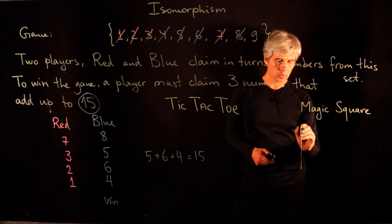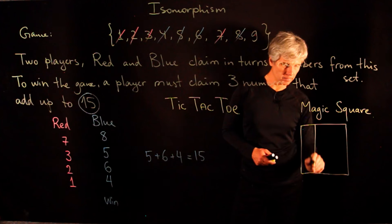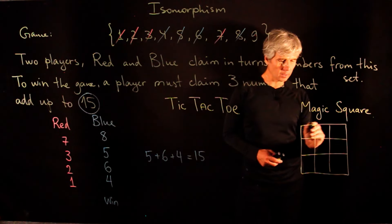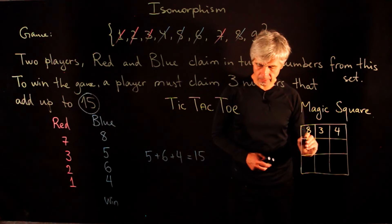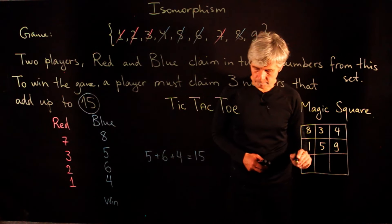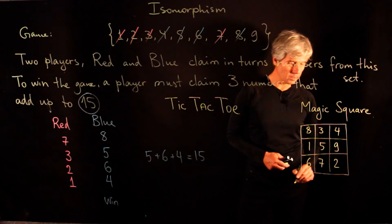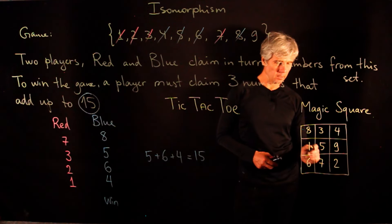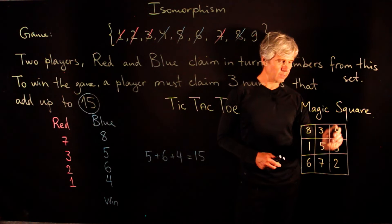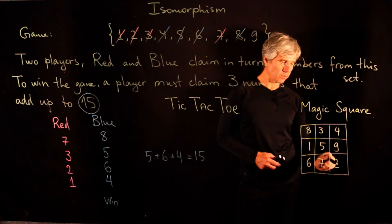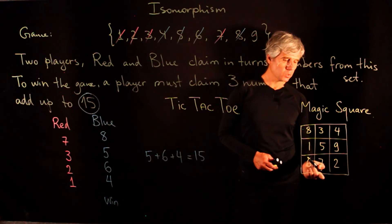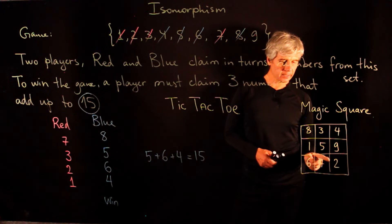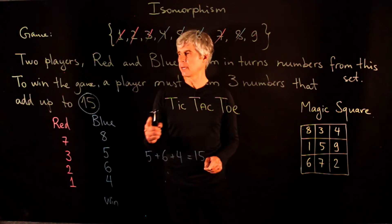To construct the isomorphism between these two games we need something called a magic square. A magic square is a 3×3 square filled with numbers from 1 to 9 with the property that every row, column, and diagonal adds up to 15. So each row sums to 15, each column sums to 15, and both diagonals sum to 15. Using this magic square, we can construct an isomorphism between tic-tac-toe and this game of fifteen.